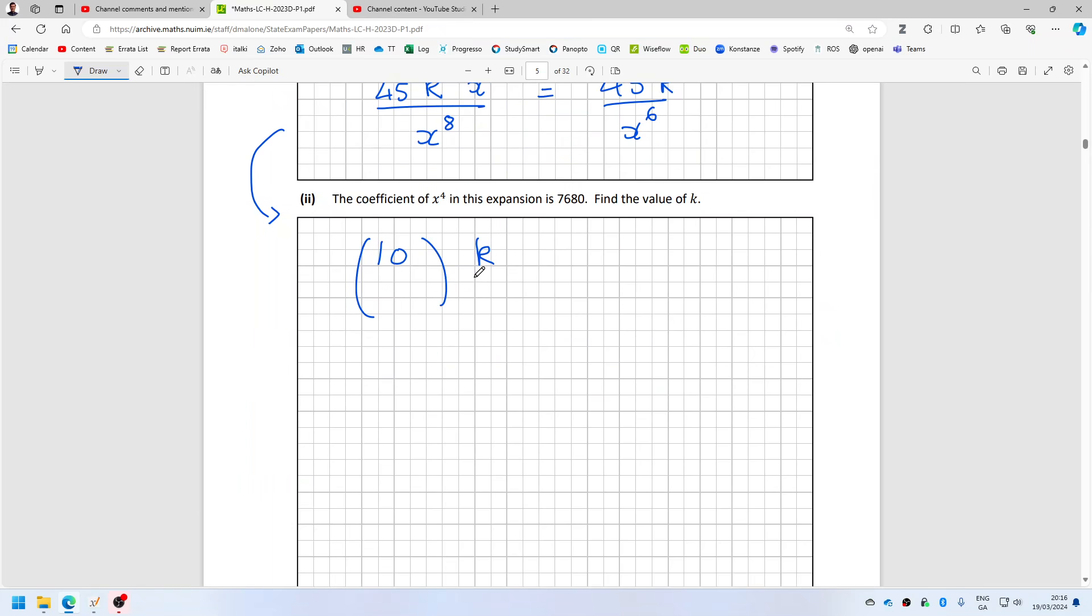x, k over x with a power. This isn't the coefficient because it includes the x and x to a power.